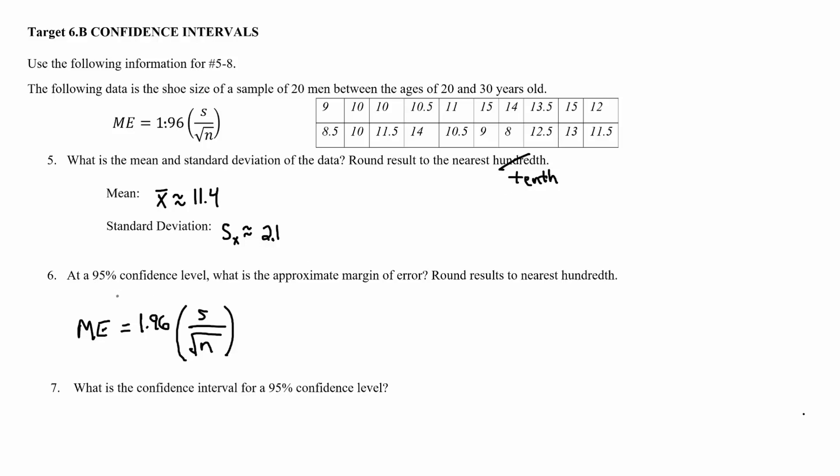The second question or question 6 says we need to come up with the margin of error. So we're going to use this formula right here where S represents the standard deviation, so I'm going to substitute that 2.1 for S. And then the N represents our sample size, so that means how many people reported their shoe size. And like I said there was 20, so I'm going to replace the N with 20.